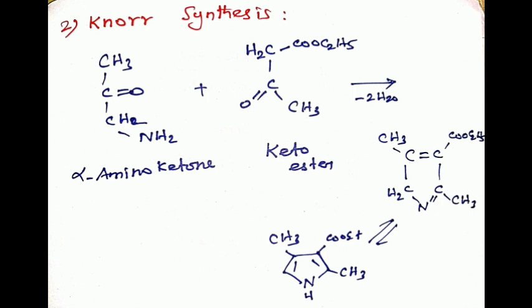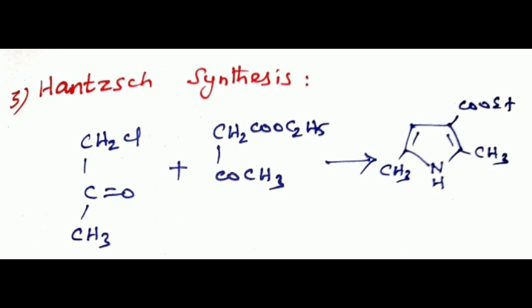Third method: Hantzsch synthesis, which is condensation of a beta-keto ester and alpha-chloro ketone in the presence of ammonia or primary amine to form pyrrole derivatives.